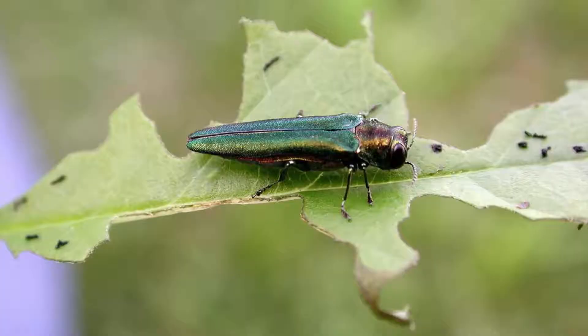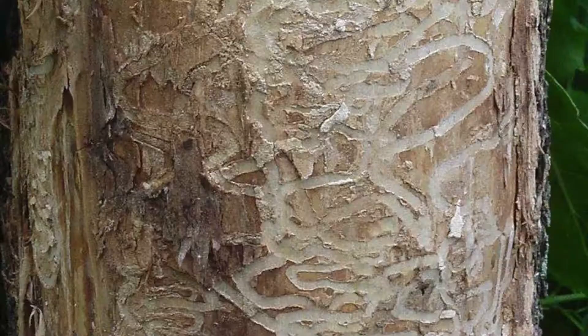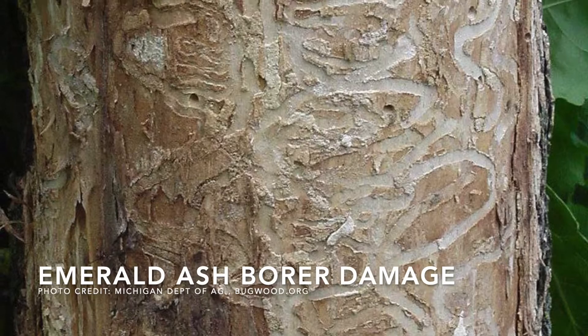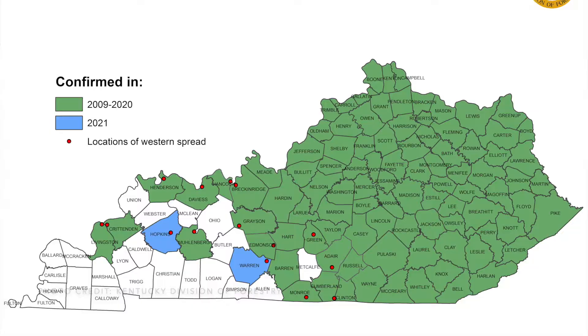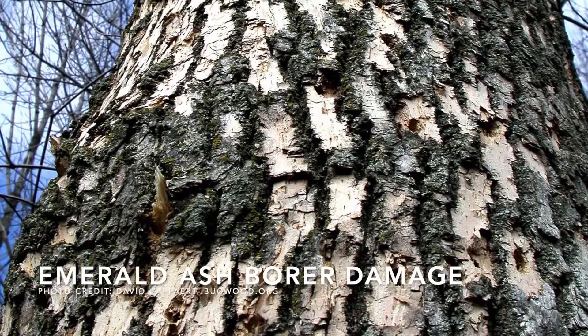Perhaps the clearest example of a forest health threat that's invasive is the emerald ash borer. The larvae of this beetle tunnel under the bark of ash trees and kill trees by cutting off their circulation. The emerald ash borer was first detected in Kentucky in 2009, and since that time it has swept through much of the state and is currently moving into the western parts of the state, killing millions of ash trees.